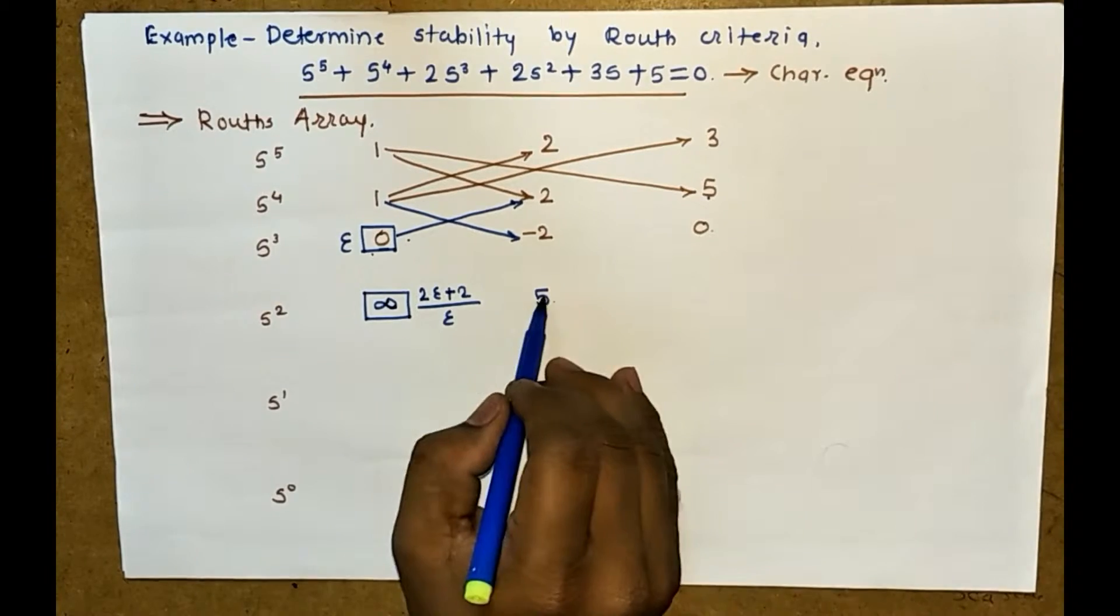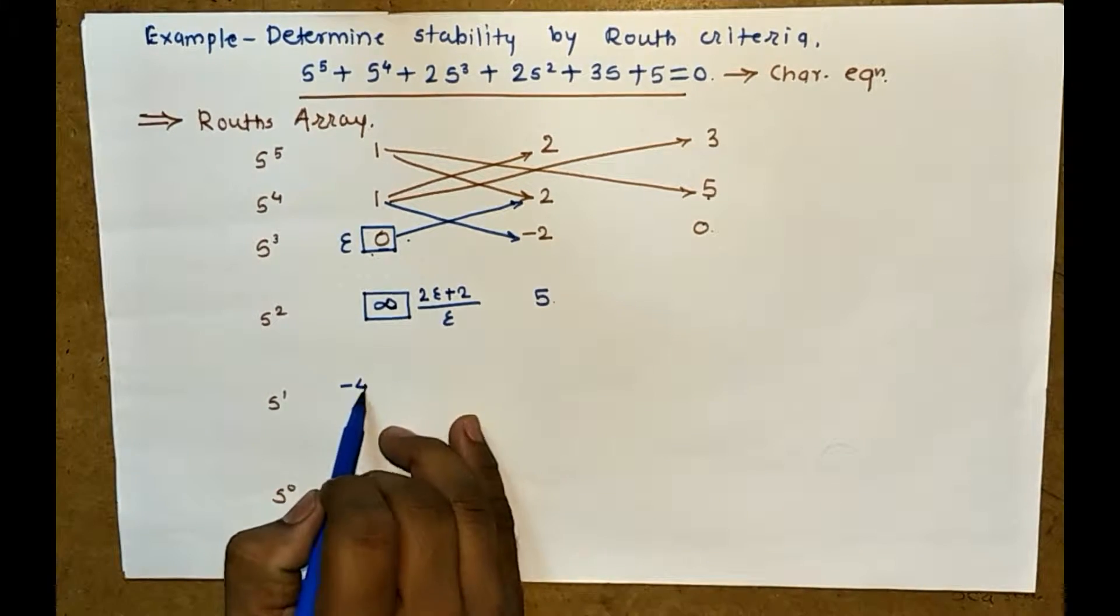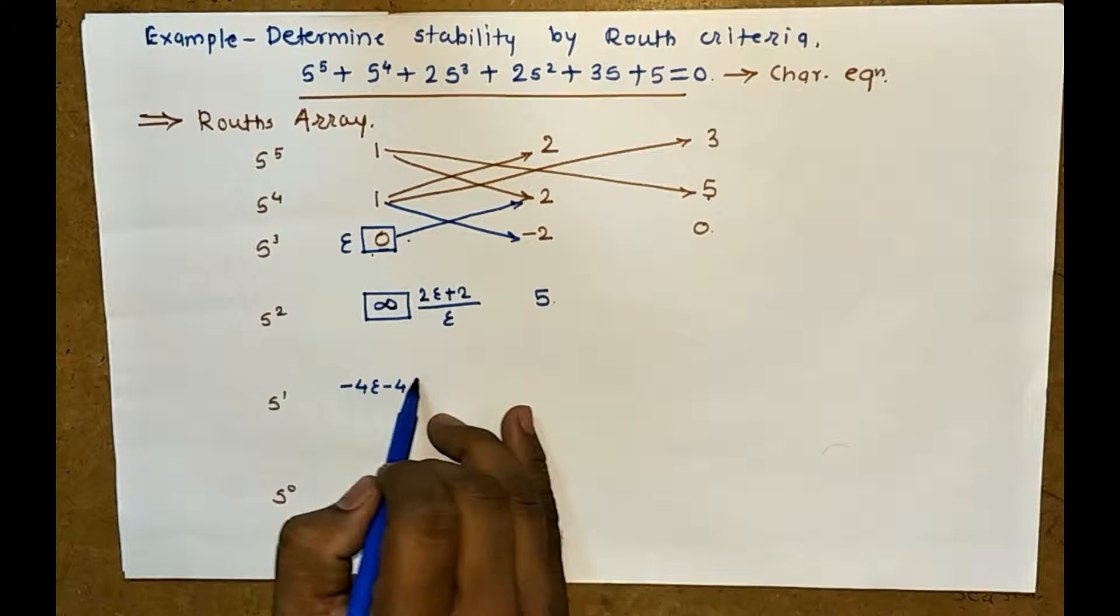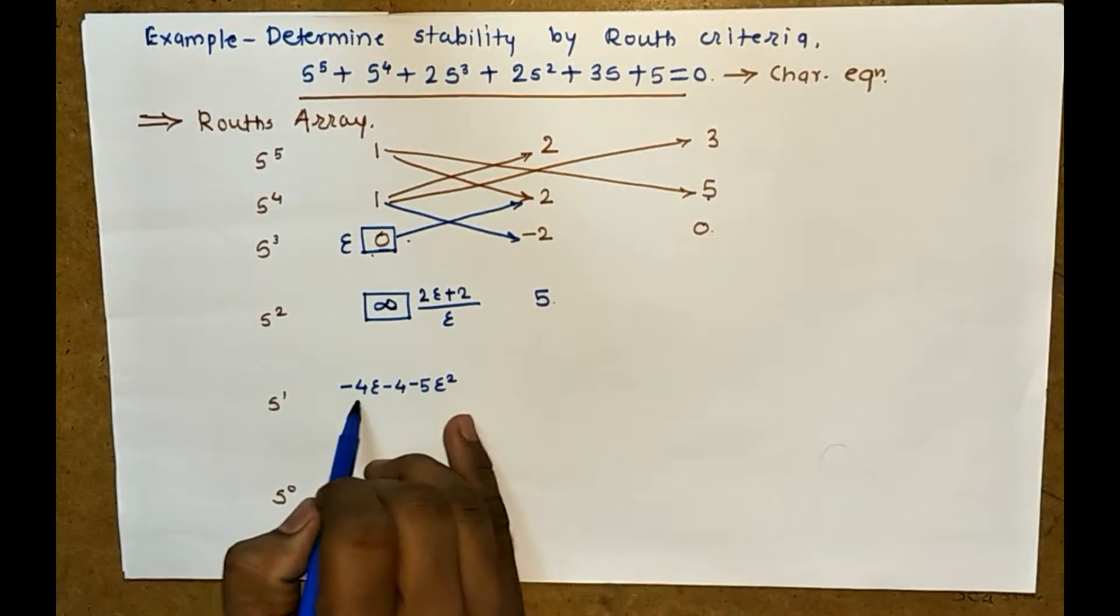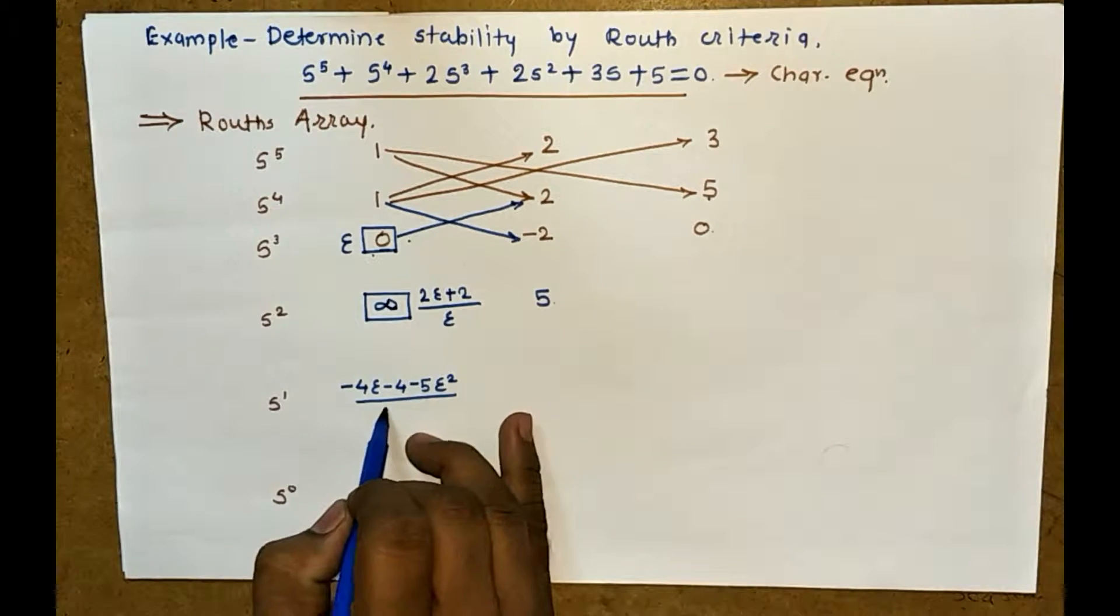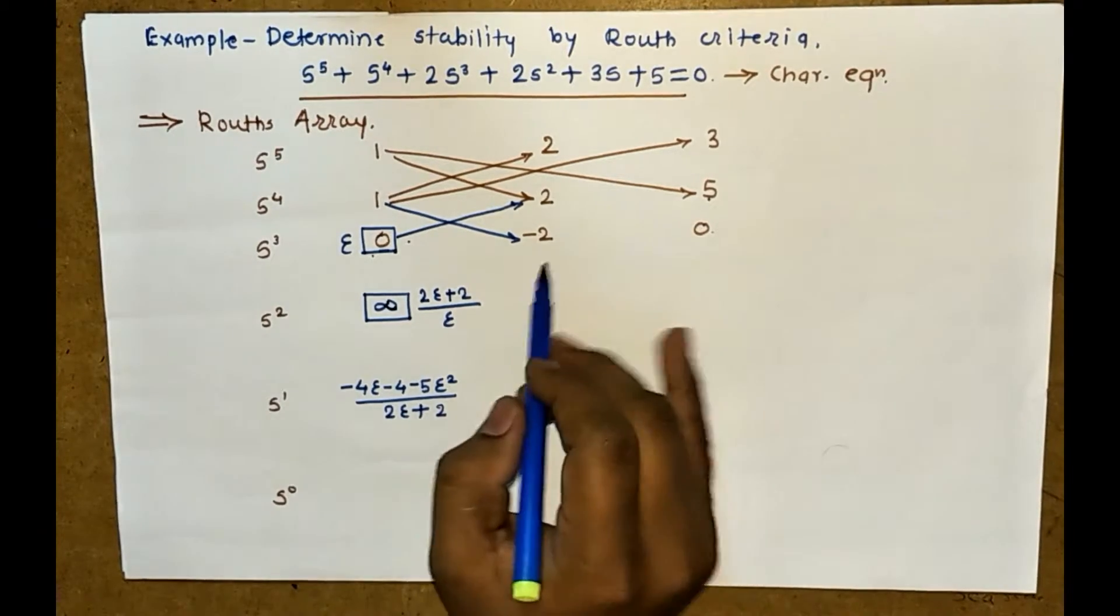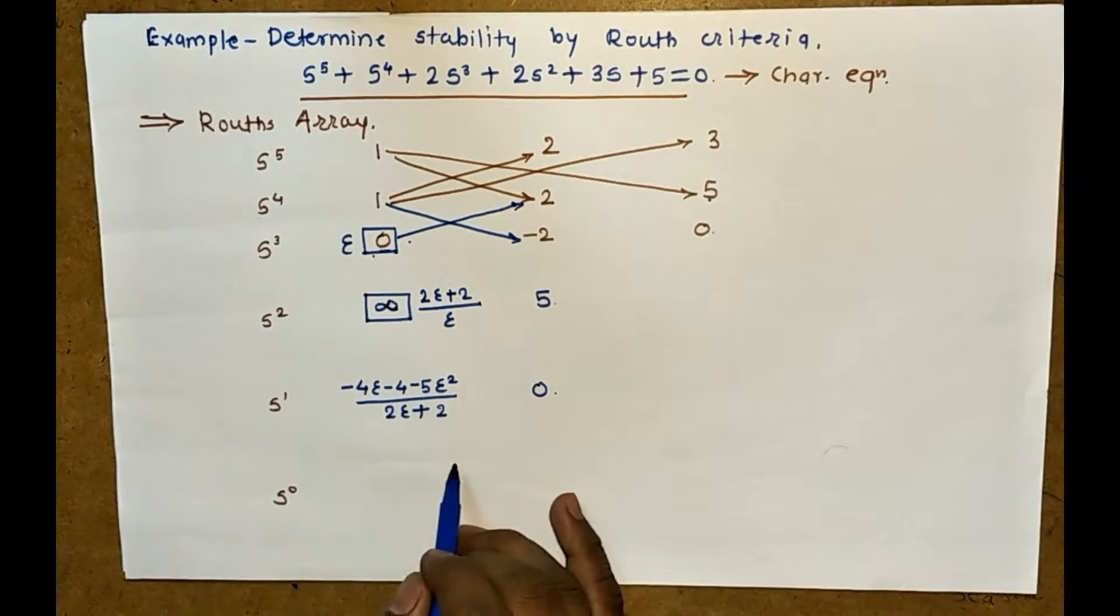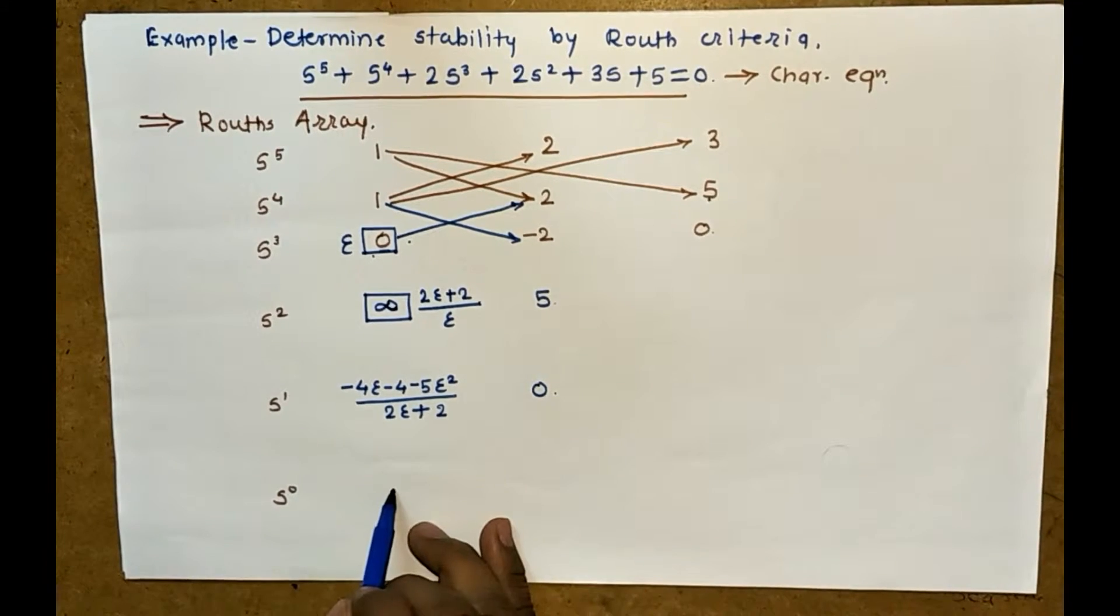Then we proceed for the next row. If you solve this you get minus 4 epsilon minus 5 epsilon squared divided by 2 epsilon plus 2. Then find the last row, here you get 5.